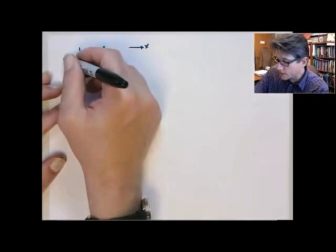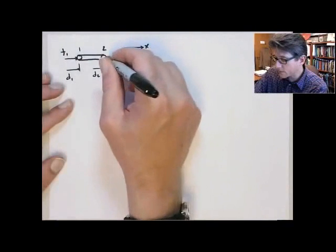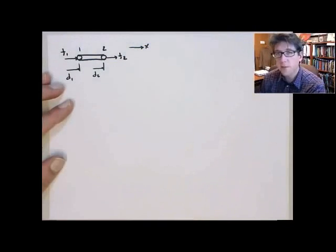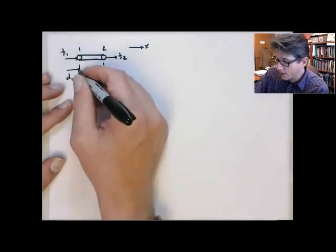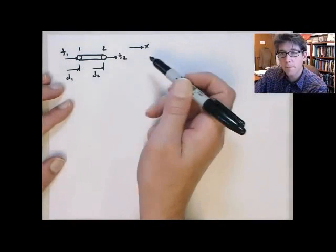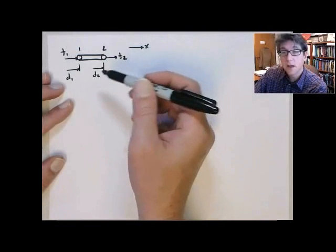We also have at each node an externally applied force. We'll label those f1 and f2 respectively, and you'll note that all the positive directions for the nodal displacements and the externally applied forces are all in the positive x direction. We're always going to keep this consistent.